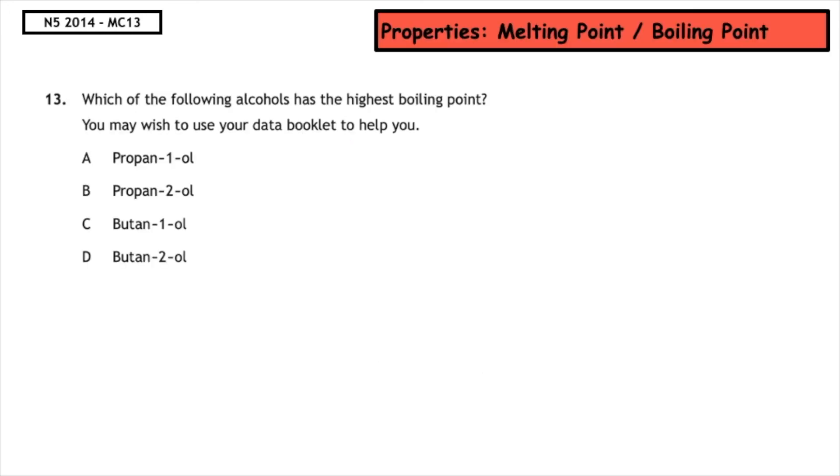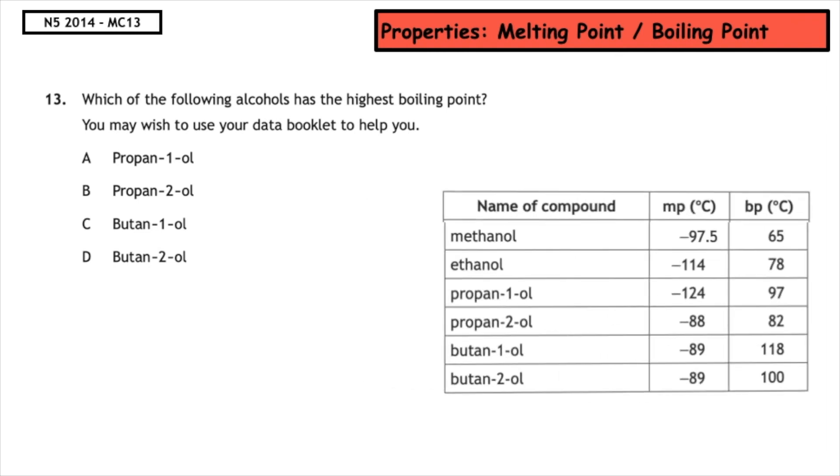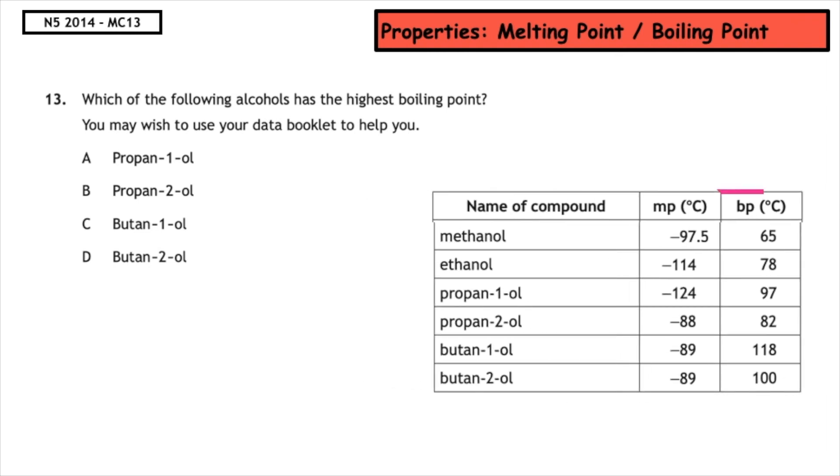This past paper question is from the National 5 2014 multiple choice. Which of the following alcohols has the highest boiling point? You may use your data booklet to help you. From the data booklet, we can see that Butan-1-ol has the higher boiling point. So the correct answer is C.